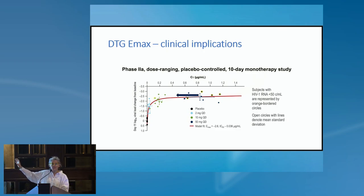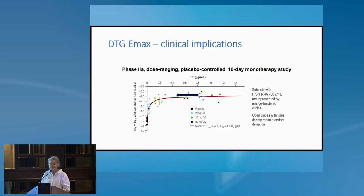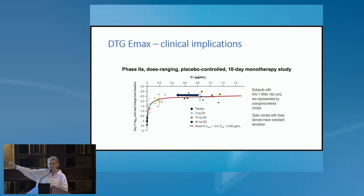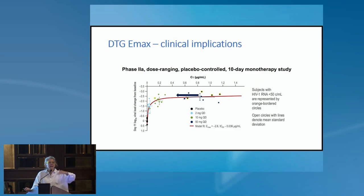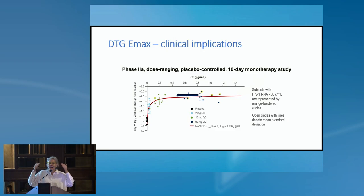This is the concentration-effectiveness Emax curve for dolutegravir. The majority of patients in clinic have concentrations at the end of the flat area of the red curve. Before that area there is a lot of flat, meaning that even with 70% lower concentrations than the crossover point, you still have enough drug. This means many drug interactions that lower the drug a bit are not clinically significant — there's a lot of room there, and that's why dolutegravir has a high IQ and a high genetic barrier.